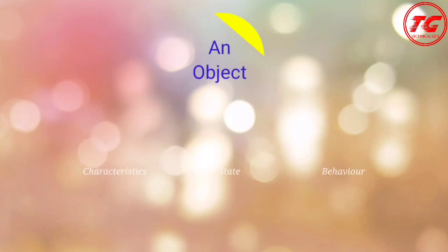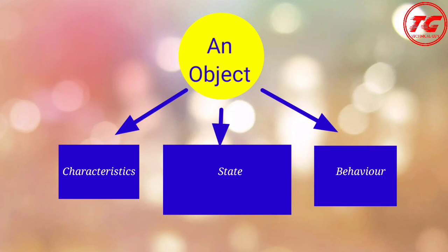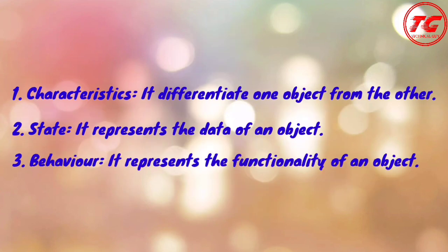An object has three things: characteristics, state, and behavior. Characteristics are the features of an object that distinguish one object from another. State of an object is the information stored in the object. Behavior is the functions that can be carried out on an object. Characteristics differentiate one object from another because every object has its own features. State represents the data of an object — the set of values stored in it. Behavior represents the functionality of an object — what it can perform.